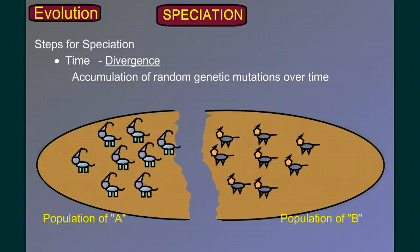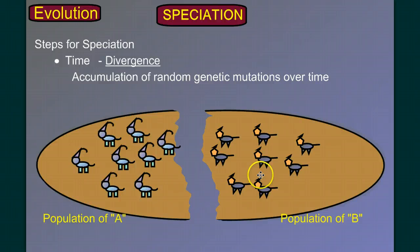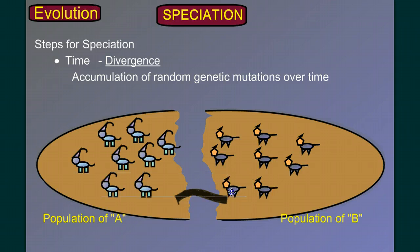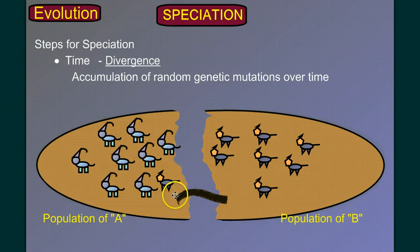Sometime in the future, let's say someone comes along and builds a bridge across the canyon to reintroduce population B and population A. If one of these individuals comes across and tries to mate with someone in population A, and they can no longer mate and produce fertile offspring, then by definition they have become separate species. Speciation has occurred.